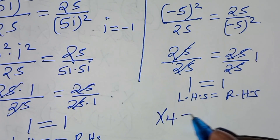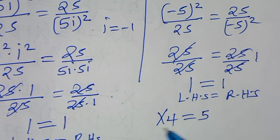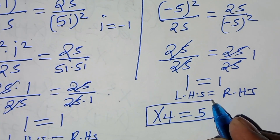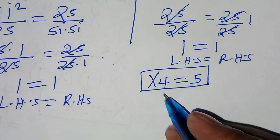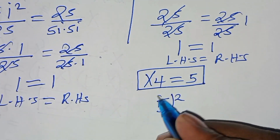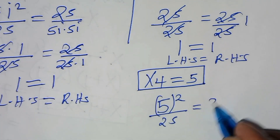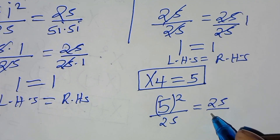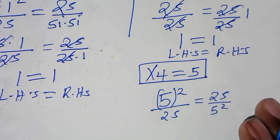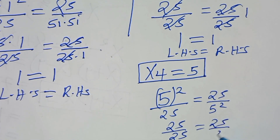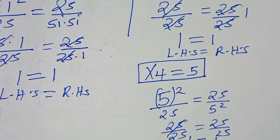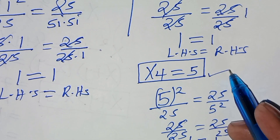For x₄ = 5, substituting gives 5² / 25 = 25 / 25 on the left, and 25 / 5² = 25 / 25 on the right. Both sides are equal, confirming that x₄ also satisfies the equation.